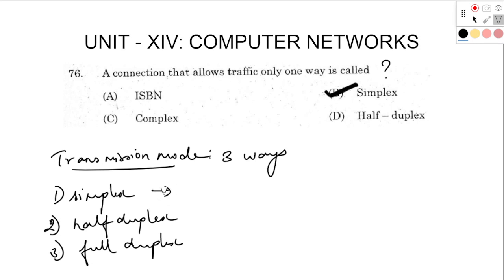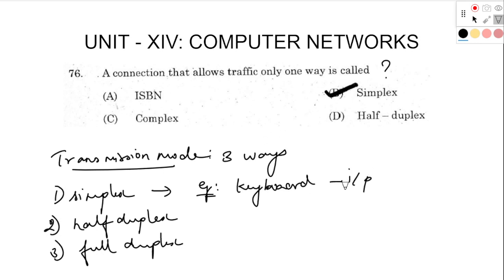Simplex — this is the best example. For example, keyboard: we can receive input signals. A connection allows traffic only one way is called simplex. If we look at the monitor, we can receive output signals. So we can receive one-way traffic. This is simplex.